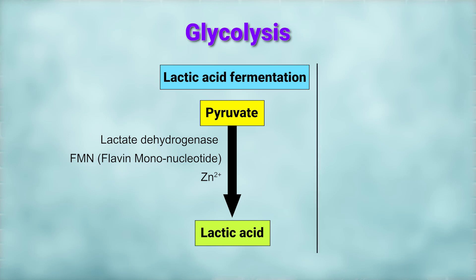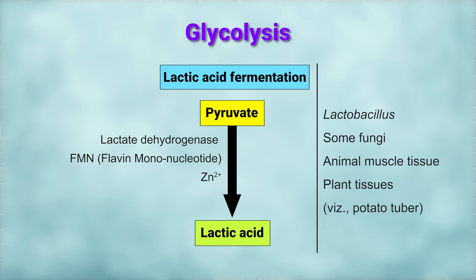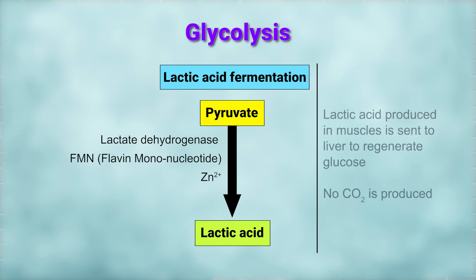During lactic acid formation, pyruvate is converted to lactic acid in the presence of the enzyme lactic dehydrogenase, which also requires FMN and zinc. It occurs in lactic acid bacteria such as Lactobacillus, in some fungi, animal muscle tissue, and in a number of plant tissues, mainly potato tuber. Lactic acid produced in muscle is sent to the liver to regenerate glucose. Here, no carbon dioxide is produced.